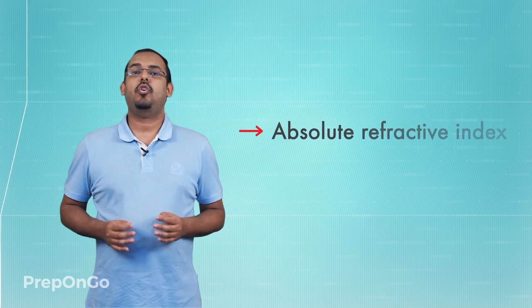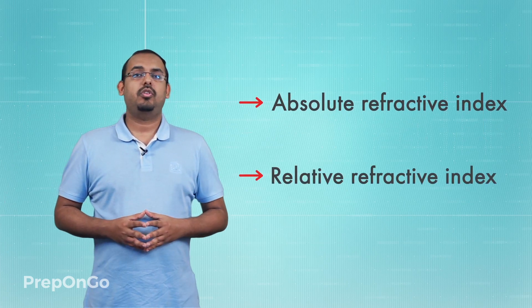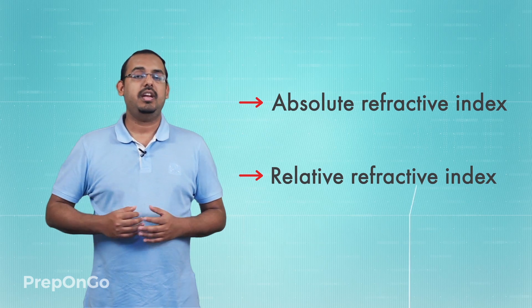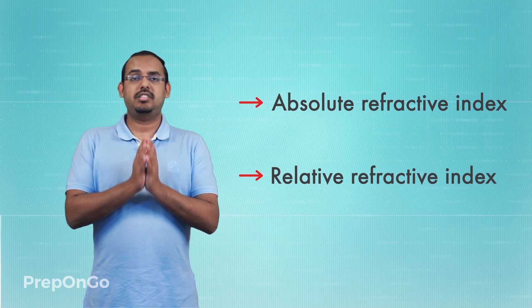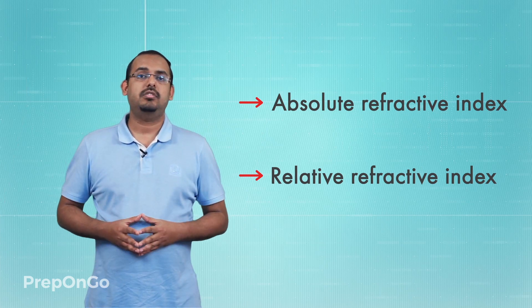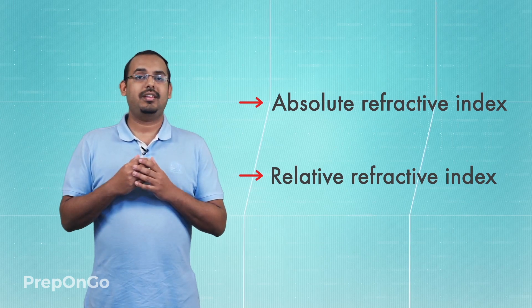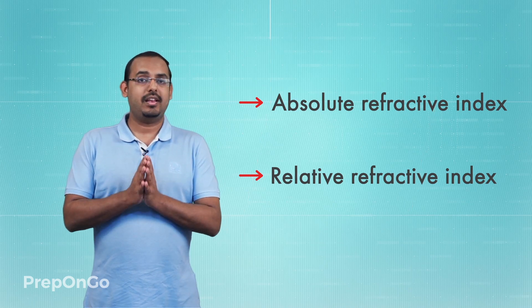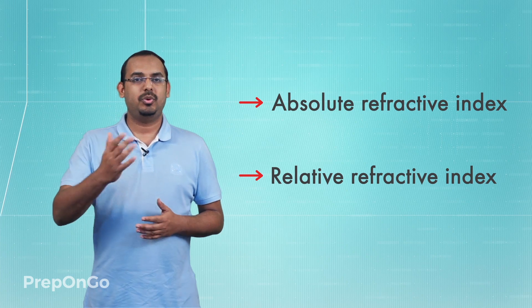In this lecture, we have gone through basic concepts related to refraction of light — the absolute refractive index, the relative refractive index, and the general rules governing how light bends when moving between mediums. In the next series of lectures, we will discuss advanced scenarios of refraction, including how light refracts through spherical lenses. See you in the next lesson.